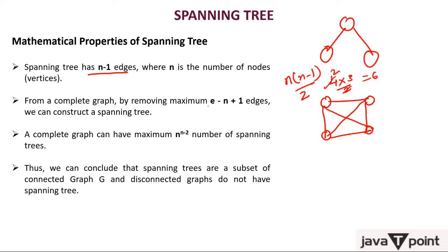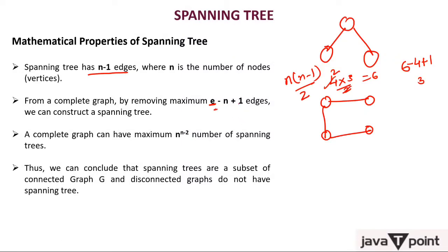For a complete graph with 4 nodes, by removing three edges we can construct a spanning tree. Remove these three edges and you have a spanning tree. A complete graph can have a maximum of n^(n-2) spanning trees, which we already discussed. We can conclude that spanning trees are subsets of a connected graph.